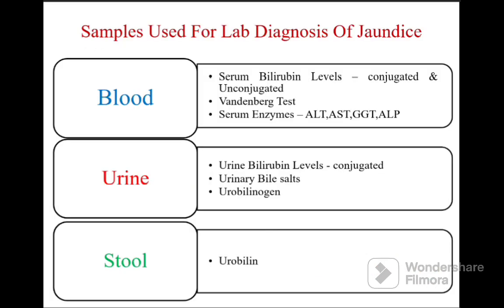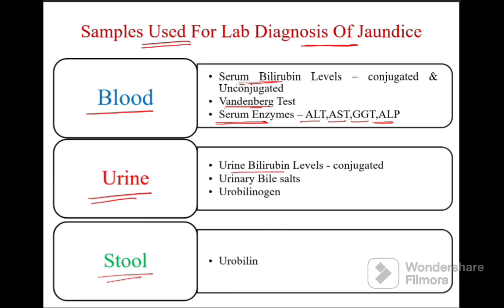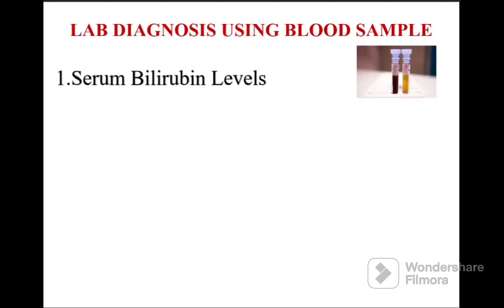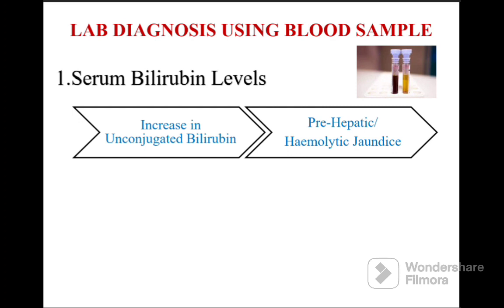The samples used for lab diagnosis of jaundice are blood or serum, urine, and stool. Tests employed include: serum bilirubin levels estimated quantitatively, the Van den Bergh test, serum enzymes such as AST, ALT, GGT, and ALP estimated quantitatively, urine bilirubin for conjugated bilirubin, urinary bile salts, and urobilinogen and urobilin content in stool.